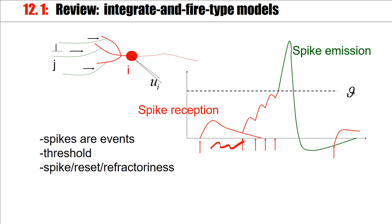Now, the spike itself is an event. It's created at the threshold. And after the spike, we have some sort of reset that leads to refractoriness.